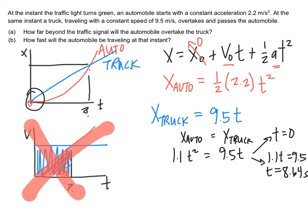All right, so now I'm ready to answer my question. How far beyond the traffic signal does the automobile overtake the truck? So I can just plug that t value into either one of the equations. Let's go ahead and use the automobile here. So 1.1 times 8.64 squared. And so after 82 meters of motion, they would be lined up again. And then the automobile would be ahead. So that's my first answer.